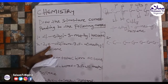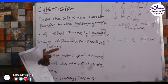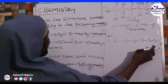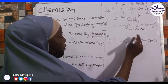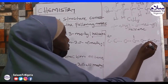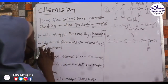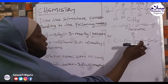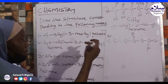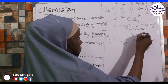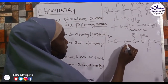Under positions 2 and 4 we have difluoro, meaning we have fluorine at those positions. Under position 2: 1, 2 — fluorine. And under position 4: 1, 2, 3, 4 — fluorine. Then at position 3: 1, 2, 3 — methyl. And at position 5: 1, 2, 3, 4, 5 — methyl.